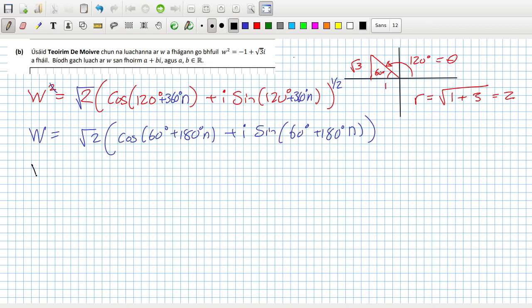So the first answer is just when n is zero. So that would be root two times a half, and then sine 60 is root three over two. So that would be root two over two plus i root six over two.